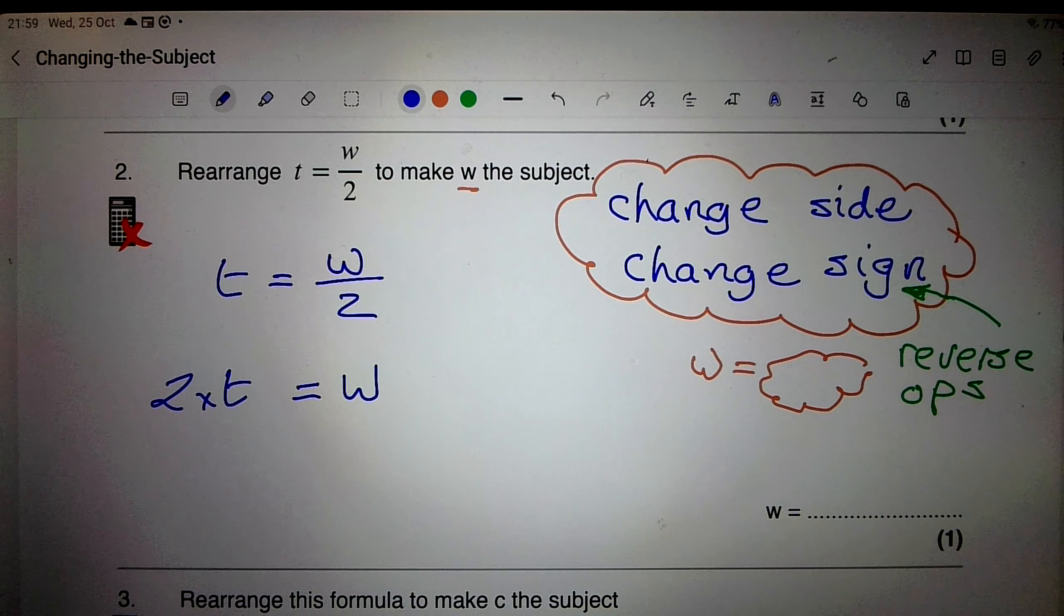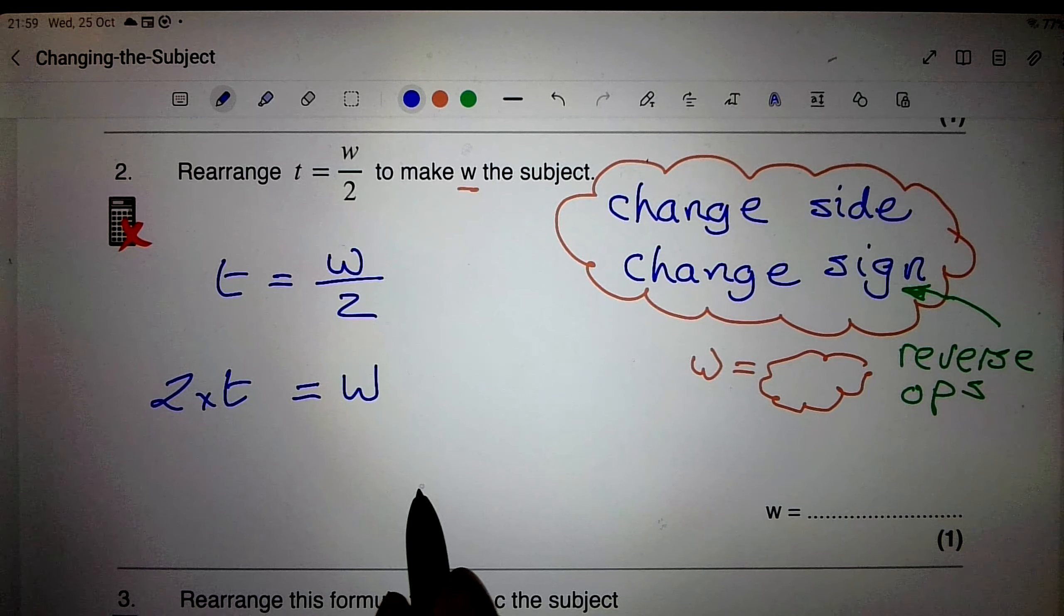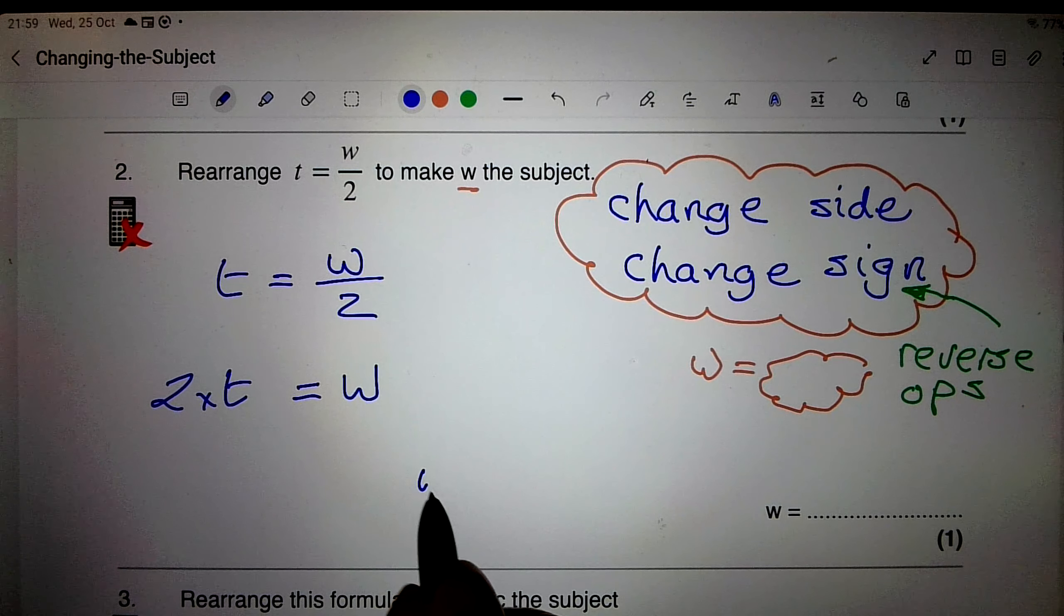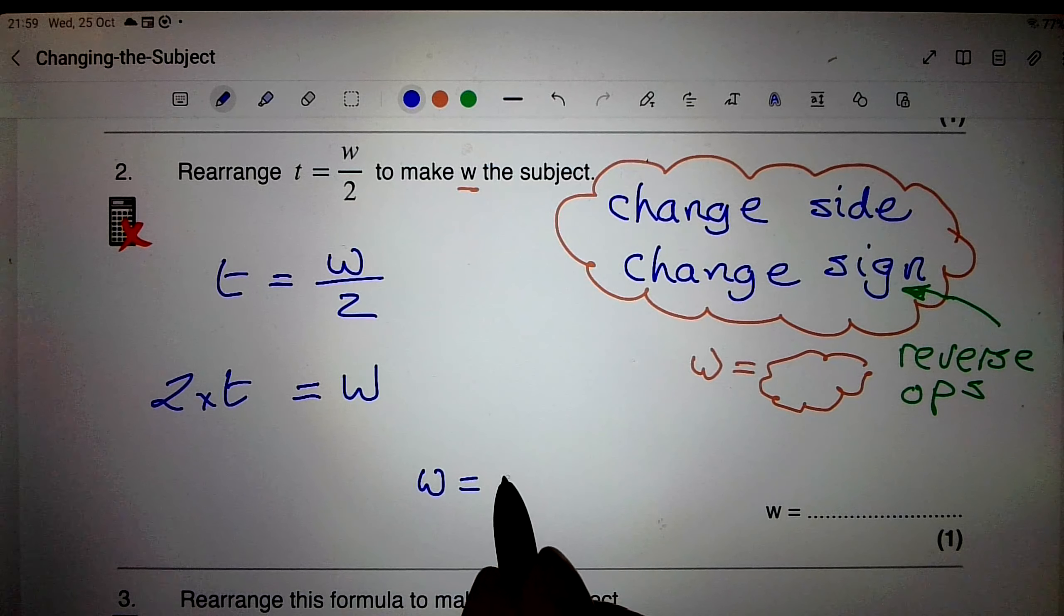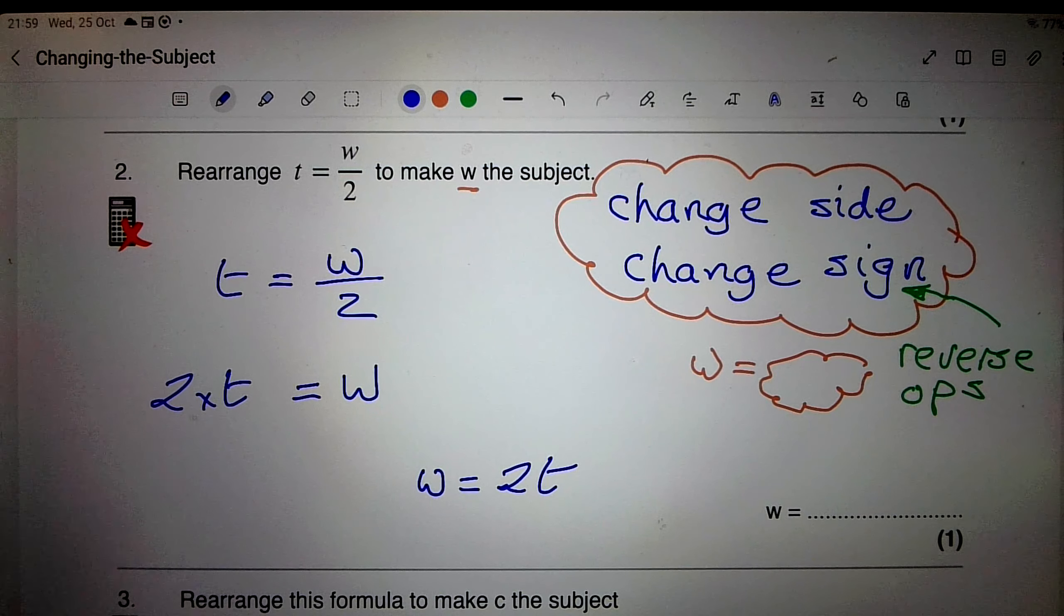But of course I can't leave it like that because I want w on the left hand side, so I rewrite it as w equals 2t. Of course I never write a multiplication sign.